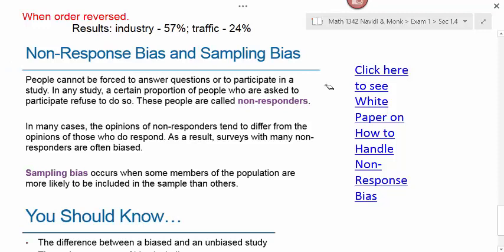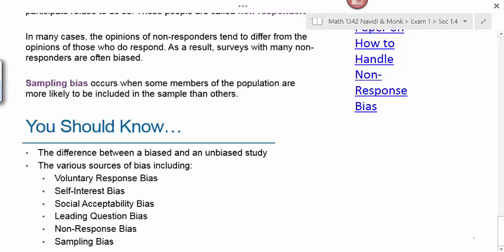If this were an experimental design course or a graduate-level course focused solely on analyzing data and designing experiments, we would look at specific ways of handling non-response bias. At the end of this section, you should know the difference between a biased and unbiased study and the various sources of bias, including all of those we just covered. This wraps up section 1.4.